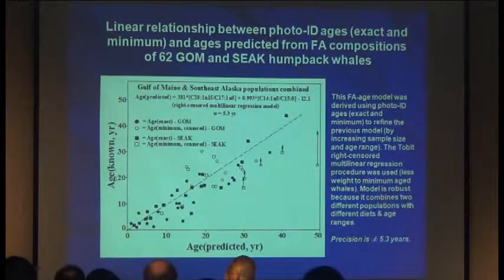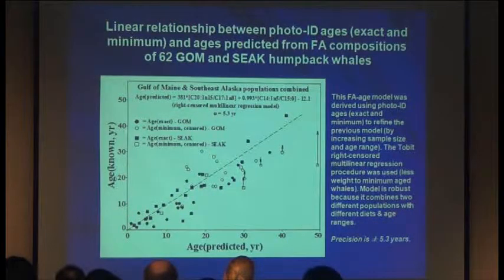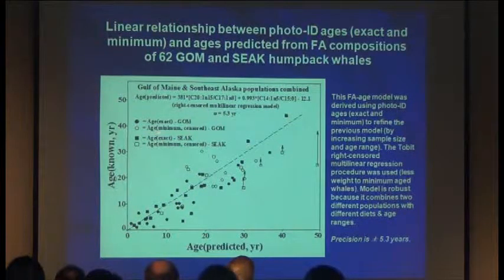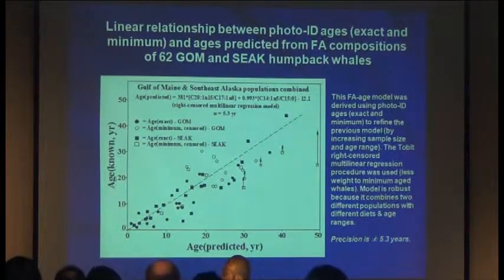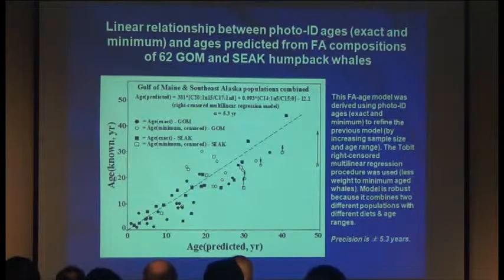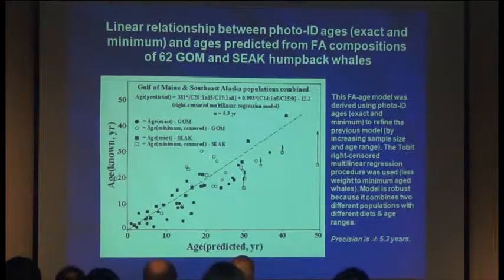He then combined the two populations and developed a model with different terms. Exact age Gulf of Maine animals are solid circles; Gulf of Maine minimum censored are non-solid circles; exact age southeast Alaska are solid squares; minimum censored are non-solid squares. For this model, the precision was plus or minus 5.3 years — so still decadal. Animals with minimum age estimates were probably older according to the model.